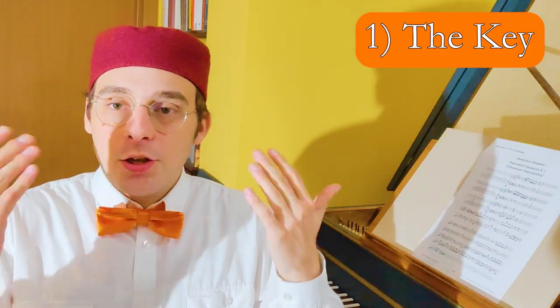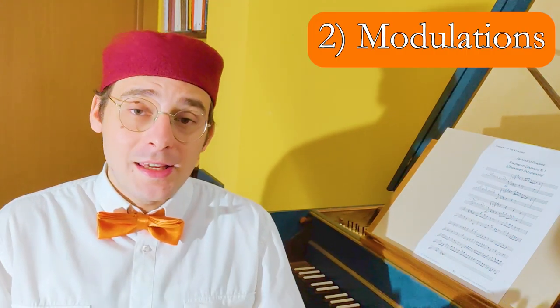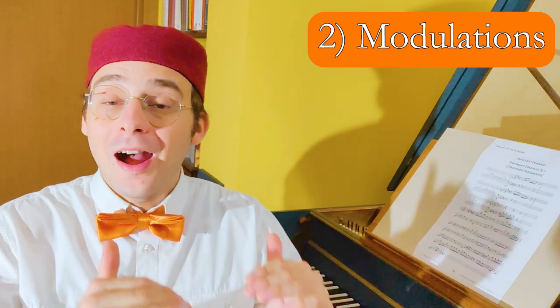Let's recap now the five elements you should consider for a correct realization of a partimento. The first is the key. Ask yourself before you start playing and harmonize a partimento. What's the key of this partimento, of this bass? The second is modulation. What key does this partimento modulate to? This is really important because if we have a figure, a pattern, and we have to transpose this pattern in the other keys, we must know which are these keys.